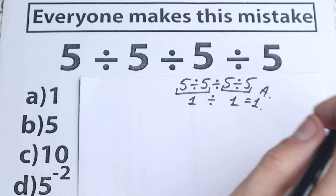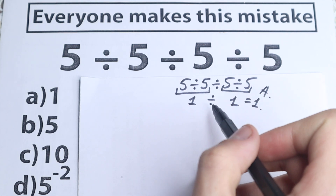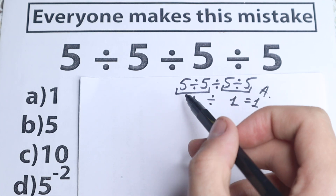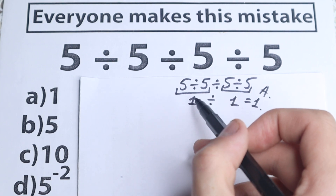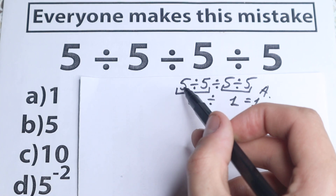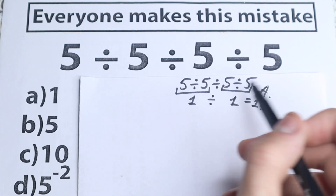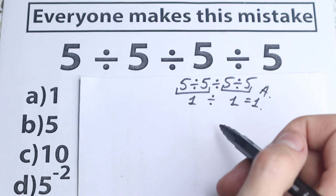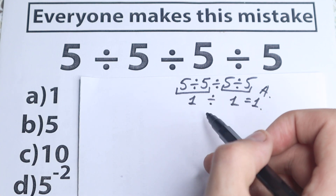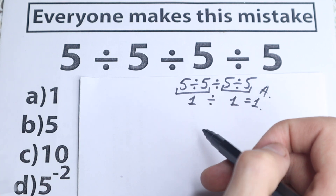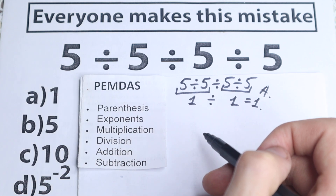Whatever order we select is going to create a different answer. If we divide first on the left-hand side, then the right-hand side, and then divide again, there are a lot of combinations. So for this question we need the PMDMC order of operations to know the correct order.